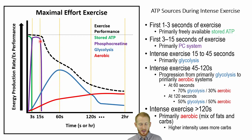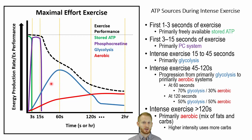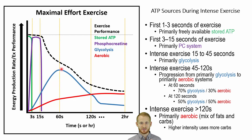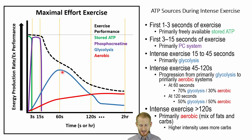Once we get past around 15 seconds, the phosphocreatine system has been plummeting in its influence, while another system has been ramping up. That new system surpassing phosphocreatine as the primary ATP source is glycolysis — the blue line — which is breaking down glucose in the blood or muscles to make energy. When we transition from phosphocreatine to glycolysis, we have a drop in exercise performance because the rate of energy released slows. We're still talking 60 seconds maybe up to about two minutes where glycolysis is the primary energy source, and exercise intensity is still pretty high.